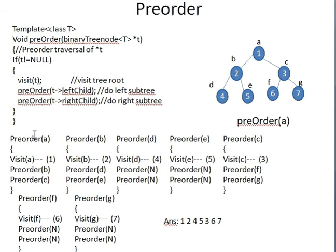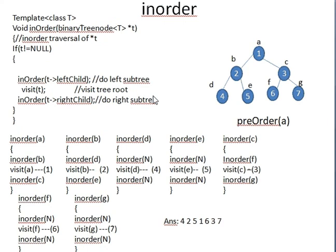That is how pre-order works - the same program gets called seven times recursively, once per node, printing the element each time. Now let's discuss in-order. The only difference is: in in-order, we don't visit the node first. Instead, we give importance to the left child first, then the node, then the right child. That's the structure of the in-order program.